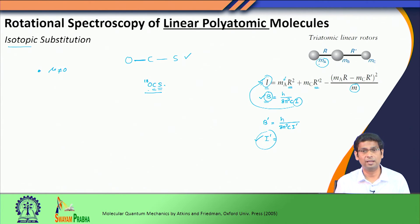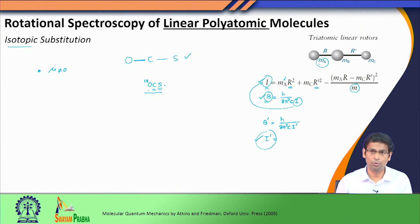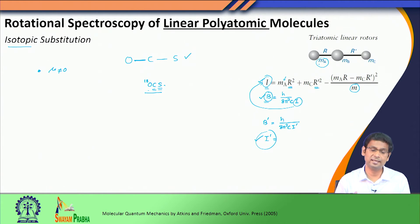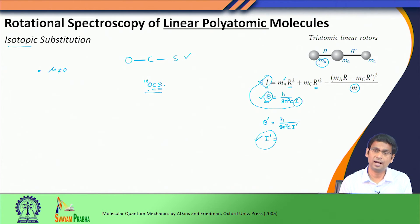Similarly, if I have a tetranuclear linear molecule, I would have to do one more isotopic substitution to find a third equation and obtain the third variable. This way I can extend the method to linear polyatomic molecules and obtain molecular structural information by doing isotopic substitution.